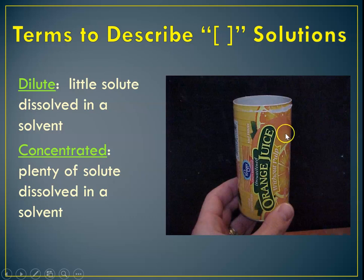And we don't typically know what the actual amounts are for, for instance, orange juice concentrate. But we know that you have to dilute it in order to drink it.